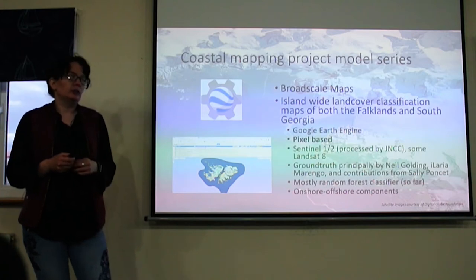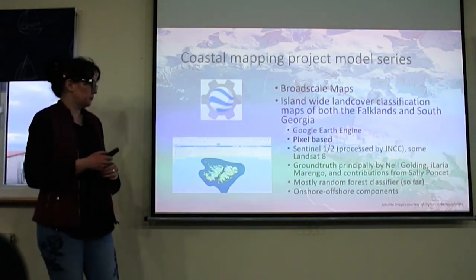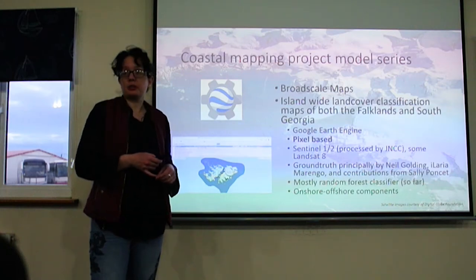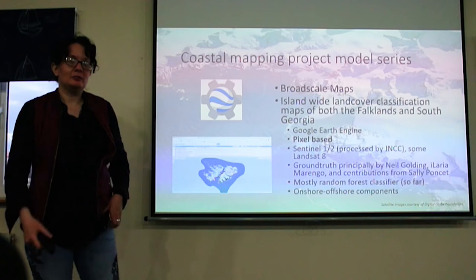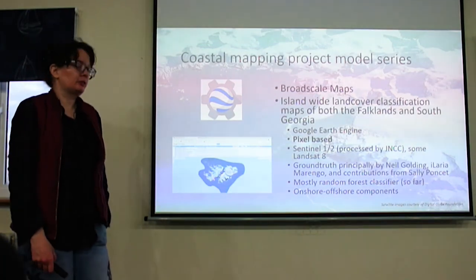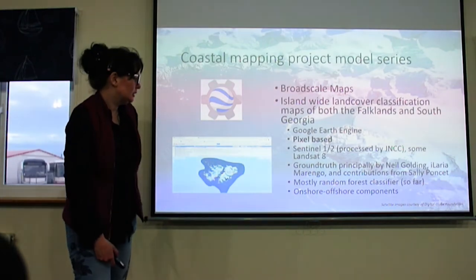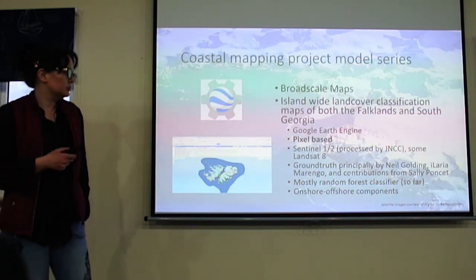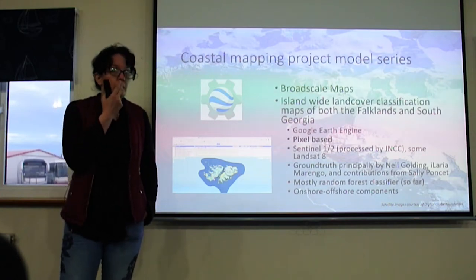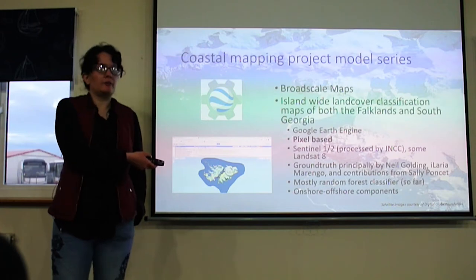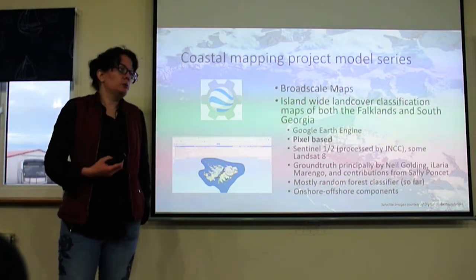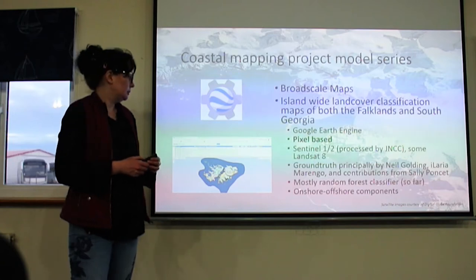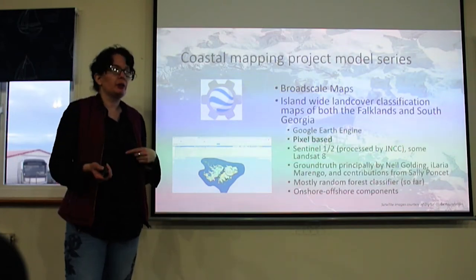The ground truthing for the broad-scale maps was compiled in good part by Neil and also by Ilaria Marengo over at SARI. We also had a lot of help from Sally Poncet last year, who was kind enough to come in and tell us what was really on the ground in South Georgia. The classifier we used for the broad-scale maps was random forest. The final maps have pretty much been produced, but if we wanted, we could go back into the same workflow and try other classifiers.